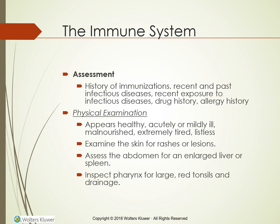Assessment — History: The nurse obtains a history of immunizations, recent and past infectious diseases, and recent exposure to infectious diseases. He or she reviews the client's drug history because certain drugs, such as corticosteroids and TNF inhibitors, suppress the inflammatory and immune response. The nurse investigates the client's allergy history and questions the client about practices that put him or her at risk for AIDS. Physical examination: the nurse performs a general appraisal of the client's health, noting whether the client appears healthy, acutely or mildly ill, malnourished, or listless. Nutrition can affect immune function. The nurse records vital signs and weight, examines the skin for rashes or lesions, assesses the abdomen for an enlarged liver or spleen, inspects the pharynx for large red tonsils and purulent drainage, and palpates the lymph nodes in the neck, axilla, and groin for enlargement and tenderness.